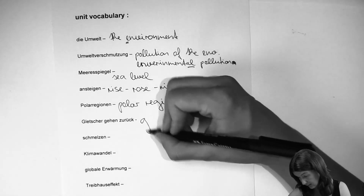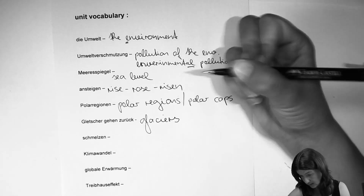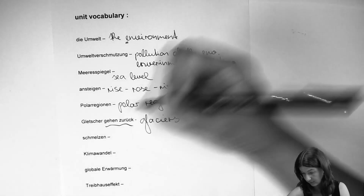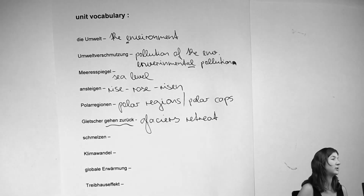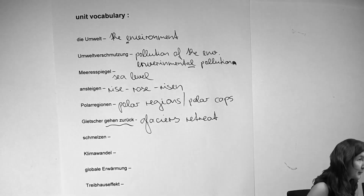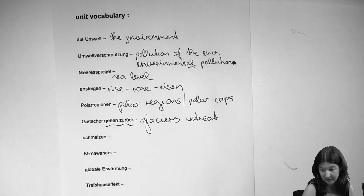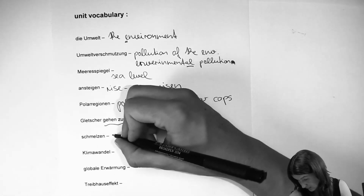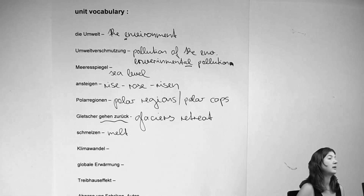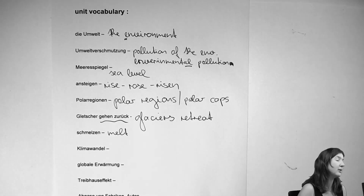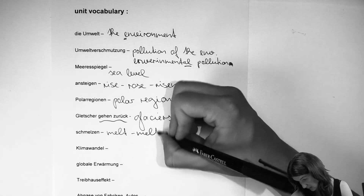The glaciers — 'gehen zurück' — a harder one: the glaciers retreat. That might be one of those words you haven't heard before: to retreat. And 'schmelzen' is an easy one: melt. It's an irregular verb but all three forms are the same: melt, melt, melt.